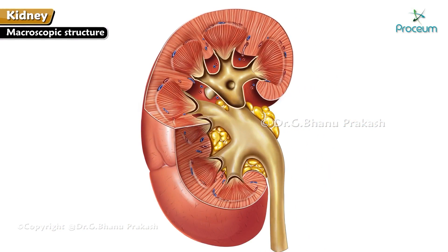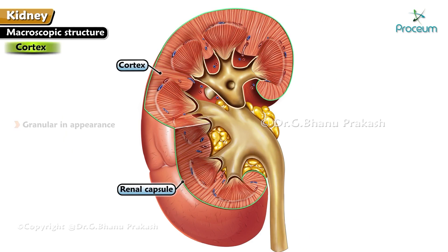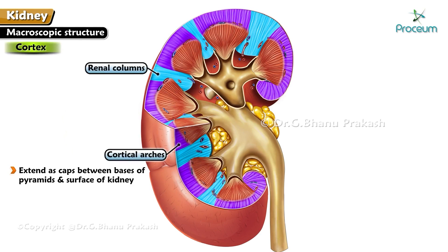Macroscopic structure: The kidney contains an outer cortex and inner medulla. The cortex is located below the renal capsule and is granular in appearance, divided into renal columns and cortical arches. Cortical arches extend as caps between the bases of the pyramids and the surface of the kidney. Renal columns extend to the renal sinus between adjacent pyramids.